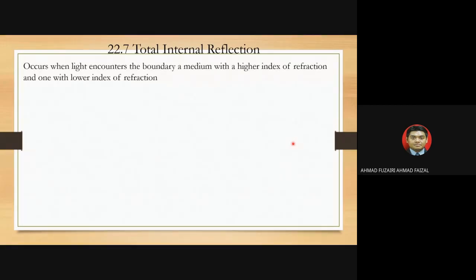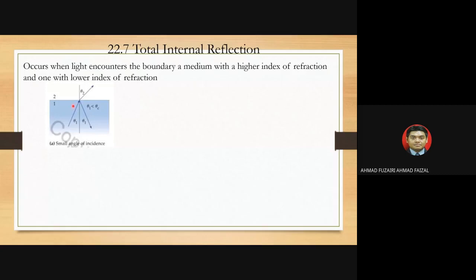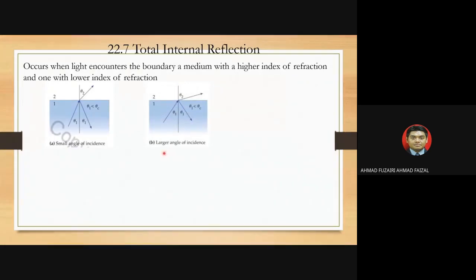Total internal reflection occurs when light encounters a boundary from a medium with a higher index of refraction to one with a lower index of refraction. As shown in the diagrams, at a small angle of incidence from medium one (higher n) to medium two (lower n), most light refracts and some reflects. As the angle of incidence increases, the refracted ray bends toward the surface and more light is reflected.